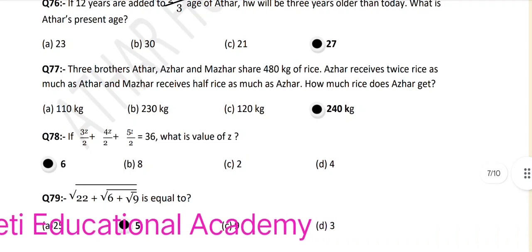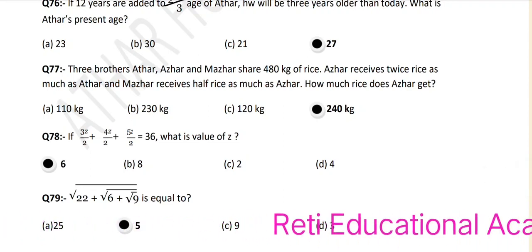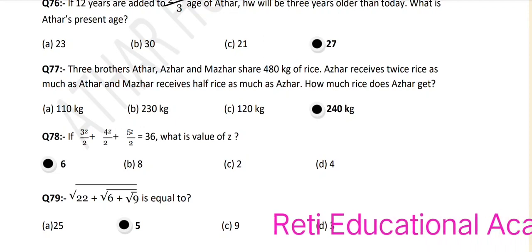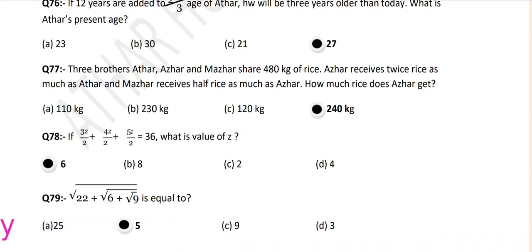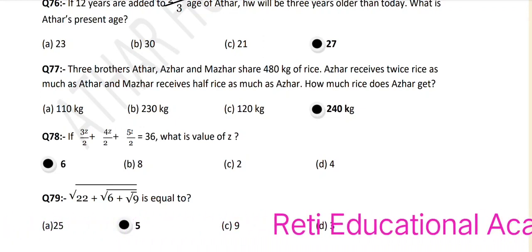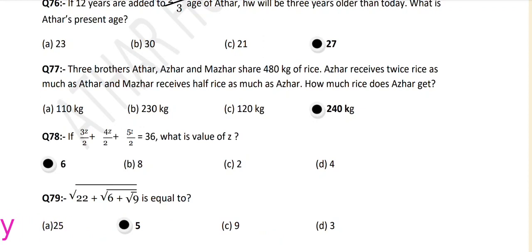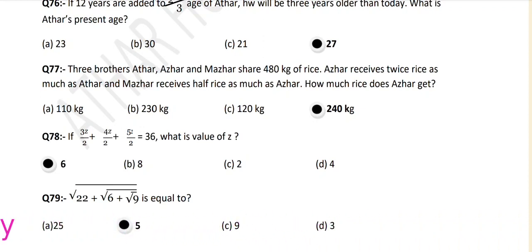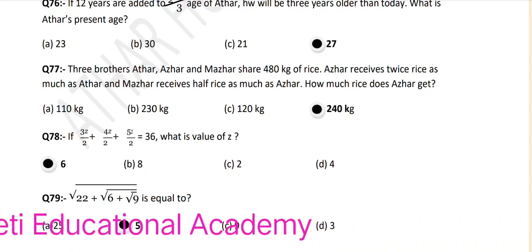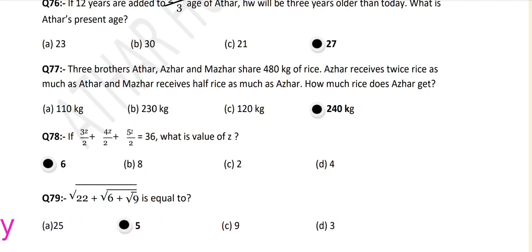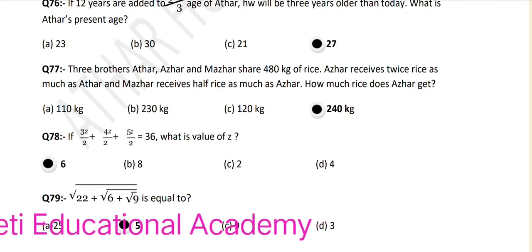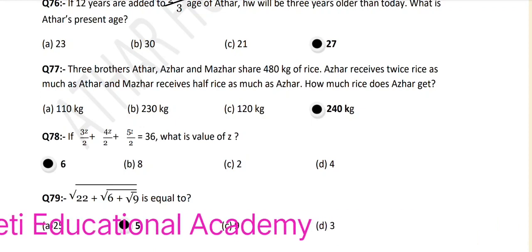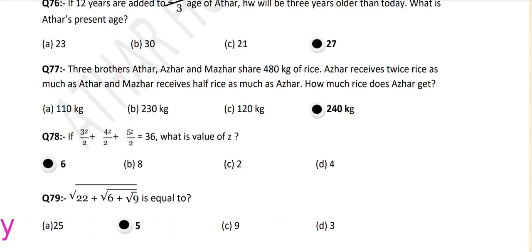Question number 77: Three brothers — Atar, Asha, and Mother — share 480 kg of rice. Asha receives twice as much rice as Atar, and Mother receives half as much rice as Asha. How much rice does Asha receive? The answer is 240 kg. Question number 78: If 3z/2 plus 4z/2 plus 5z/2 is equal to 36, what is the value of z?